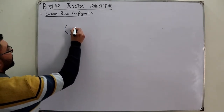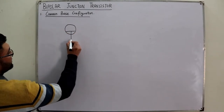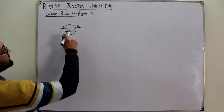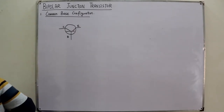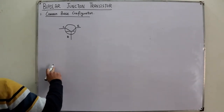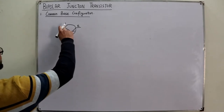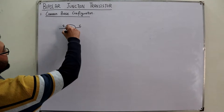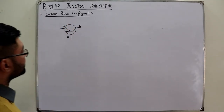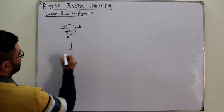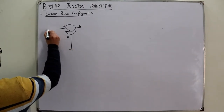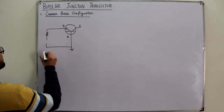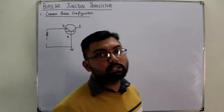The base terminal is here, then this is your collector terminal, and this is your emitter terminal. Depending on whether you're using an NPN or PNP transistor, you have an arrowhead. For an NPN transistor, the emitter terminal has the arrow going outside. The base is common, so it would be grounded. You can also have a resistance RE here and a biasing potential. For the active mode of operation, the emitter-base junction has to be forward biased.